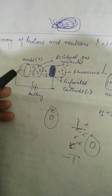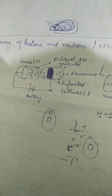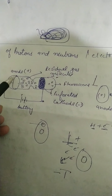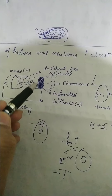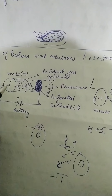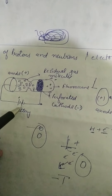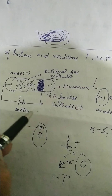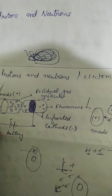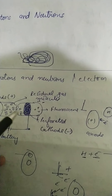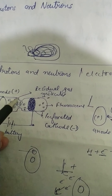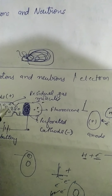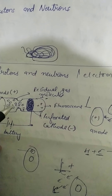So let us consider here is a cathode ray tube, and there are two electrodes — anode and cathode. The anode is joined to the positive part of the battery and the cathode is joined to the negative part. There are two chambers here; I have differentiated the two chambers. Consider that residual gas molecules are present.